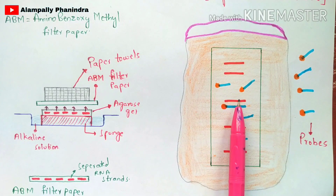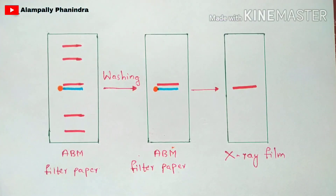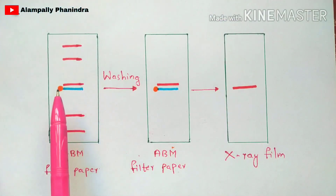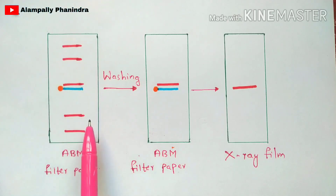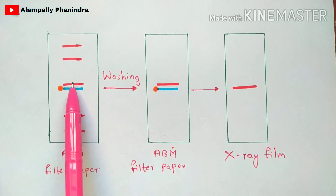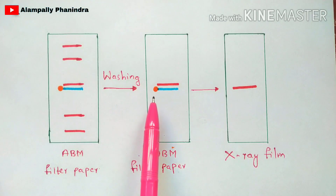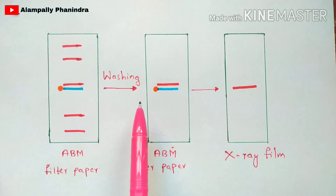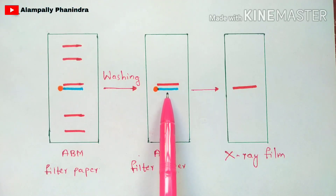The probe attaches to the complementary strand on the ABM filter paper. After this hybridization, the ABM filter paper is removed and a washing step is performed. Washing removes all RNA strands that did not bind to any probe. The probe itself is then also removed, as the RNA strand of interest has already been detected by it.